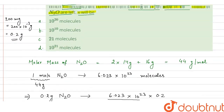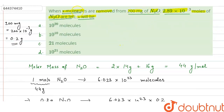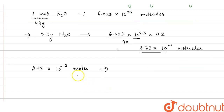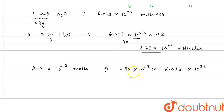These are the total molecules present in 200 milligram of N₂O. X molecules are removed and we are left with 2.89 × 10⁻³ moles. We will convert that into molecules: 2.89 × 10⁻³ moles contains 2.89 × 10⁻³ × 6.023 × 10²³ molecules, which equals 1.7948 × 10²¹ molecules.